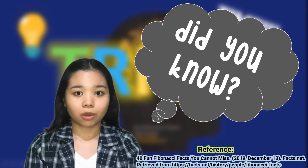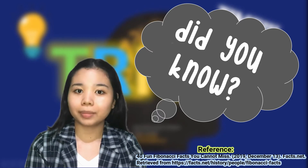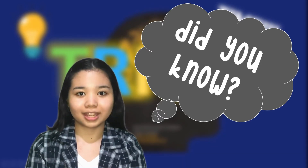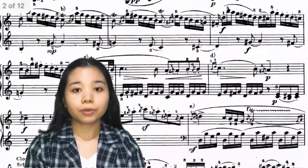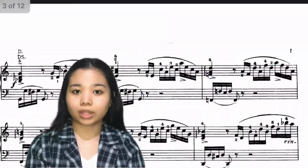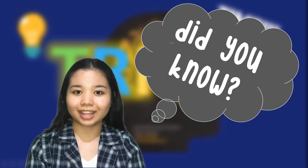Did you know? The Fibonacci Sequence is also used in music. Wolfgang Amadeus Mozart executed the Fibonacci Sequence in his most well-known pieces of music. A good example is Mozart's Sonata No. 279. In fact, he wrote the mathematical sequence in the margins of the sheet music — and Mozart's Sonata 279 is actually the background music of this part.